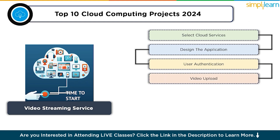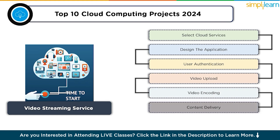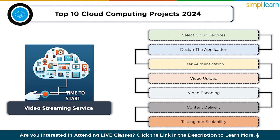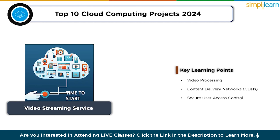Allow users to upload videos to cloud storage, then implement video encoding to create different quality versions. Use a Content Delivery Network (CDN) to distribute videos efficiently to users. Test video streaming and ensure it scales to handle concurrent users and varying network conditions. Key learning points: video processing, content delivery networks, and secure user access control.